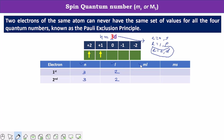Then let's calculate the value of ml. These values are calculated on the basis of the azimuthal quantum number. In the d orbital, the ml values above the orbitals are plus 2, plus 1, 0, minus 1, and minus 2. For the first electron, the value is plus 2. For the second electron, the value is plus 1.